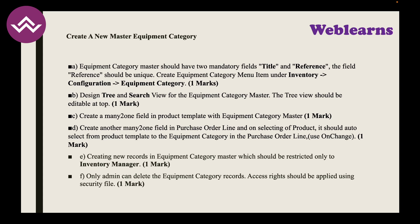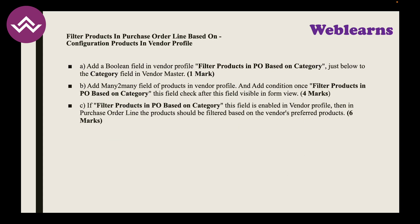Task D: Creating a new record in Equipment Category master should be restricted to the Inventory Manager only. Admin should be the only one who can delete Equipment Category records. Access rights should be applied using the security file.